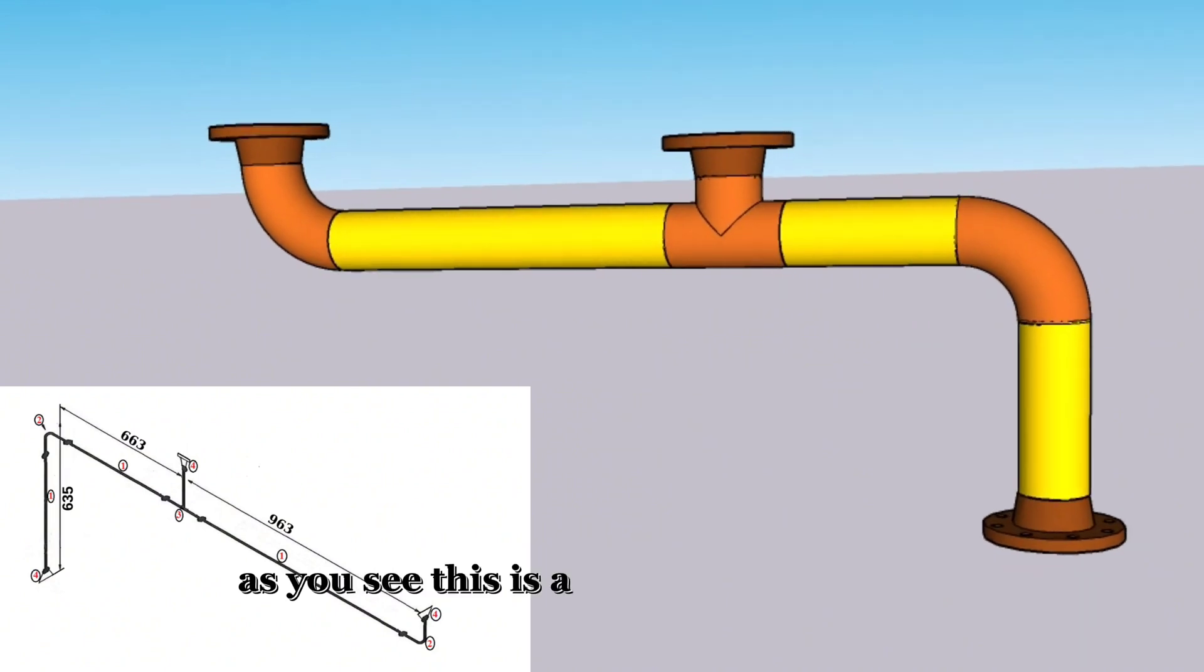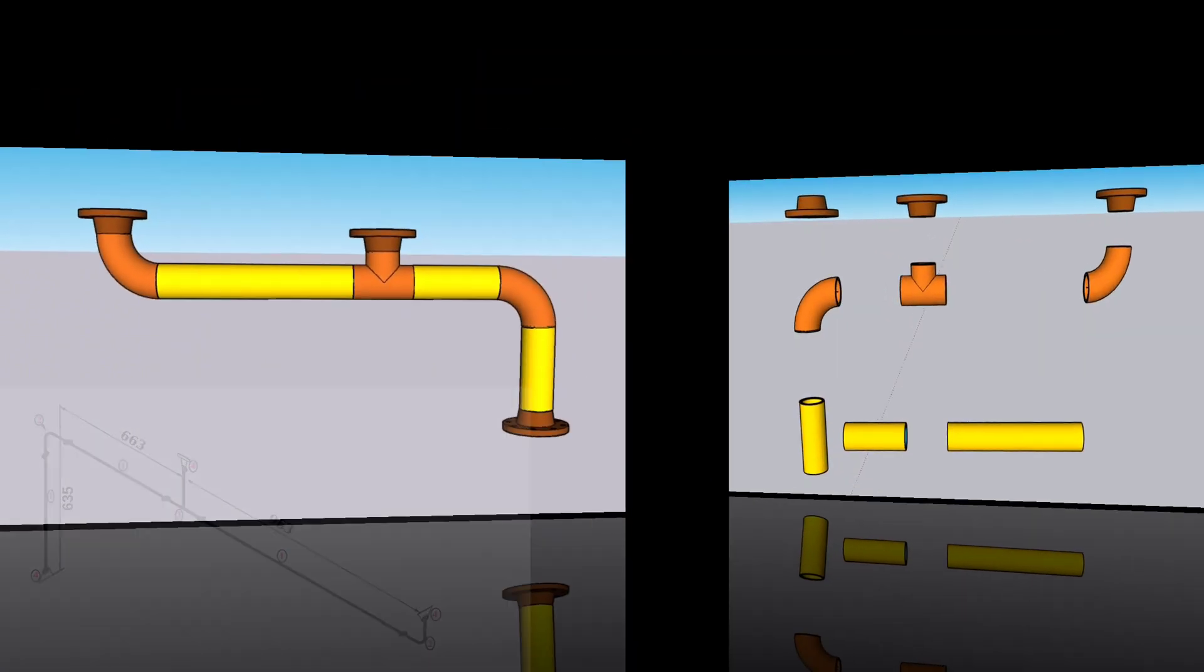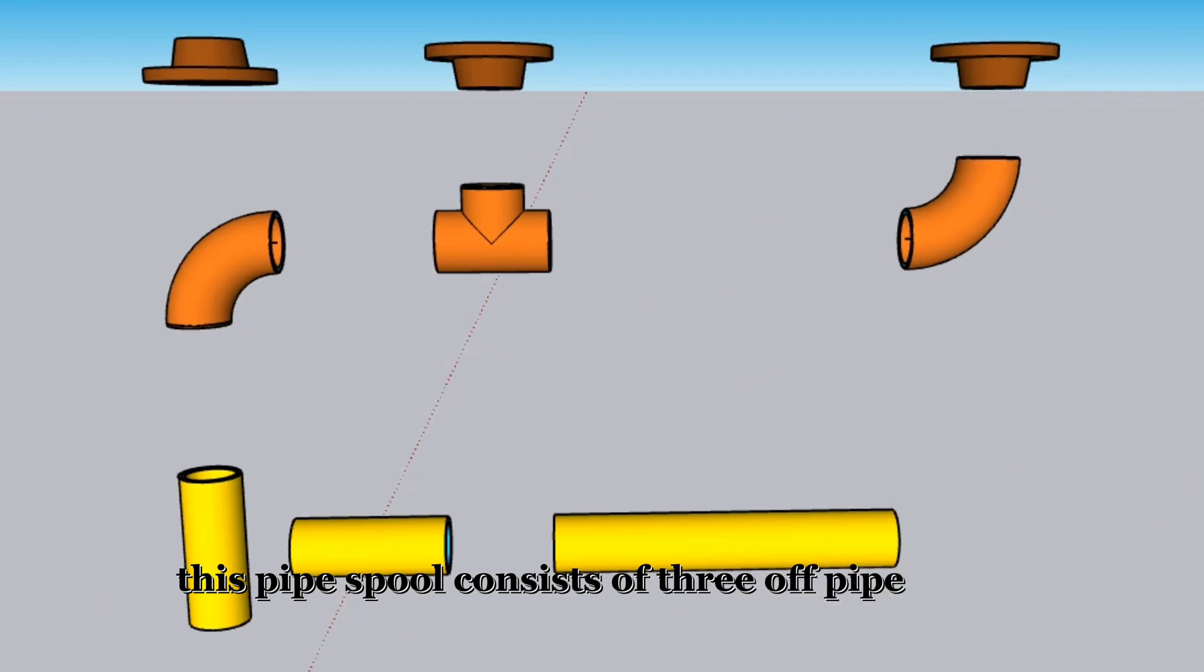As you see, this is a fabricated pipe spool. This pipe spool consists of 3 pipe pieces, 2 90-degree butt weld elbows, 1 pipe tee, and 3 weld neck flanges.